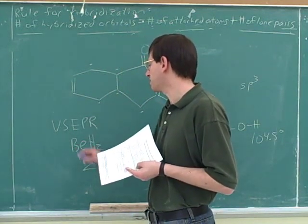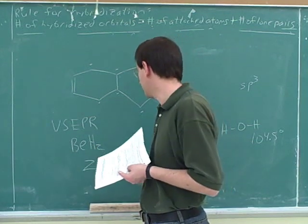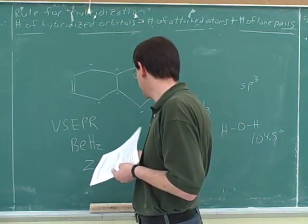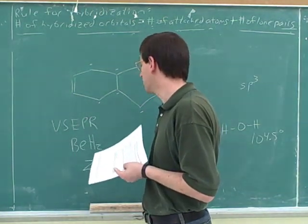Yeah. Then this is so far to the left in the periodic table that it can have a very incomplete octet. So it doesn't have any lone pairs, just two hybridized orbitals. And it's SP hybridized. So this would be linear. All right.